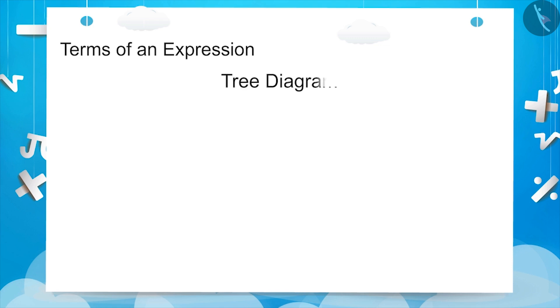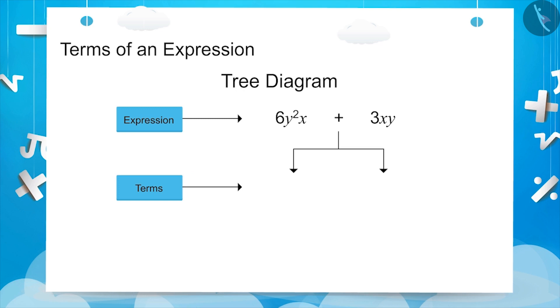Children, so far we have read about terms of an expression. Let us now revise it through a tree diagram. The expression 6y squared x plus 3xy is formed by combining two terms, in which 6y squared x is the first term and 3xy is the second term.